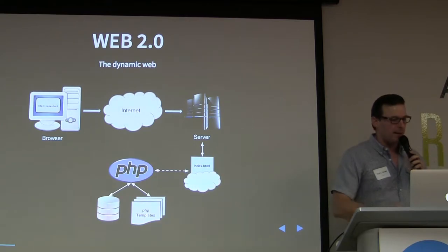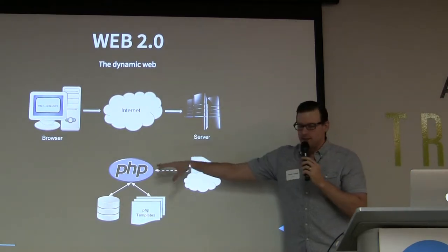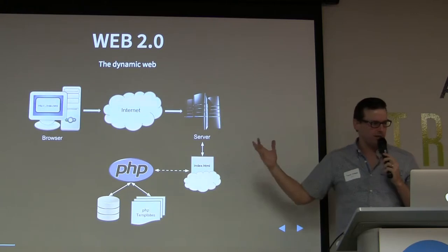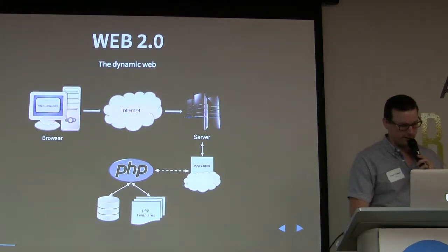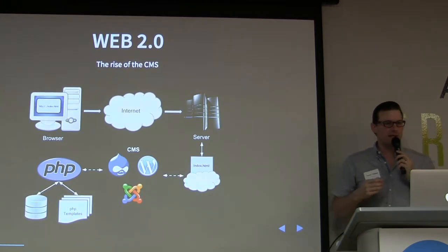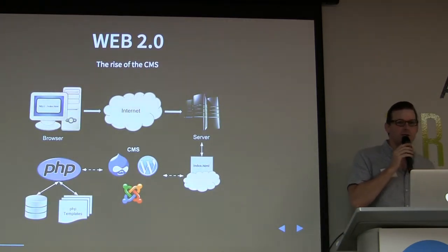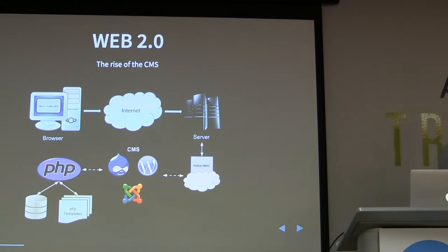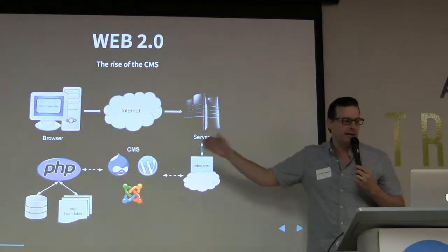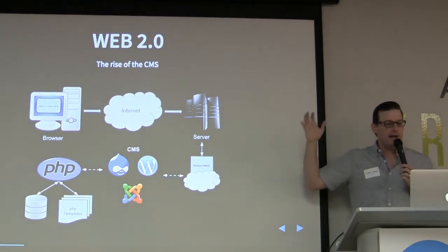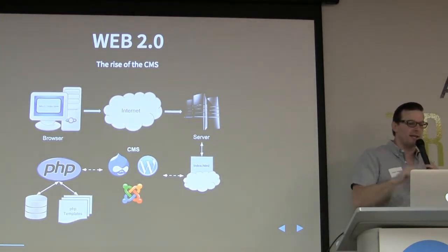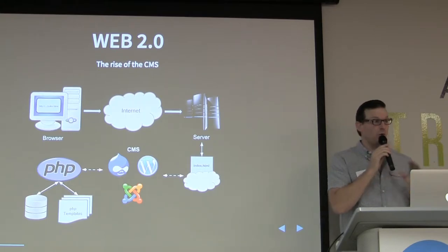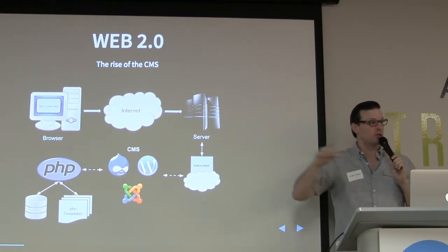Out of the dynamic web came even more clever developers who said we can make frameworks out of this — we can make it so users can generate their own content. Through this came the rise of CMSs. The rise of CMSs came from the notion that you can provide a framework not just to developers, but to publishers and all these types of people, to generate their own content and put it inside databases. People can author their own content, save it, and that content goes into the database. This is still the majority of the internet today.